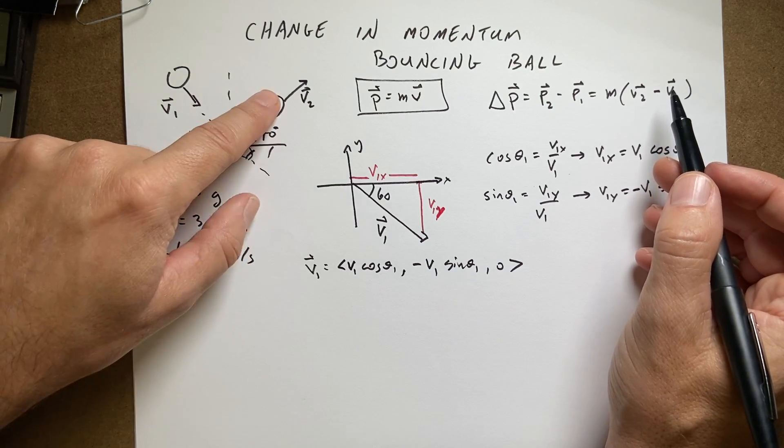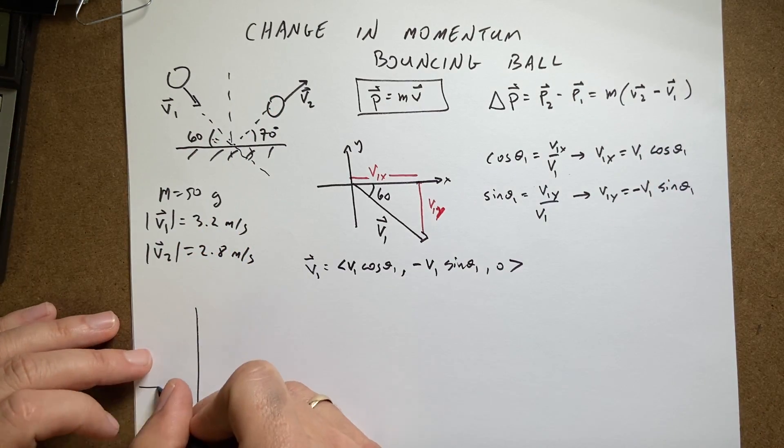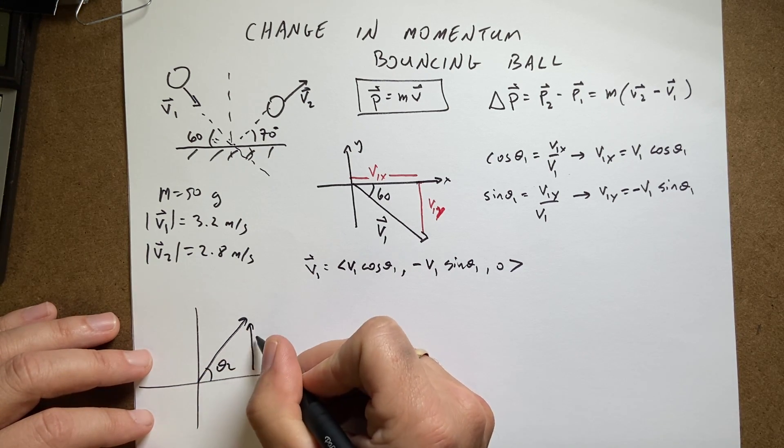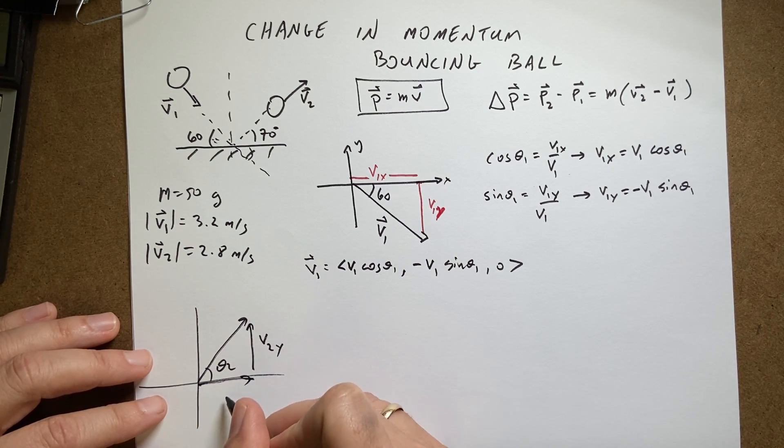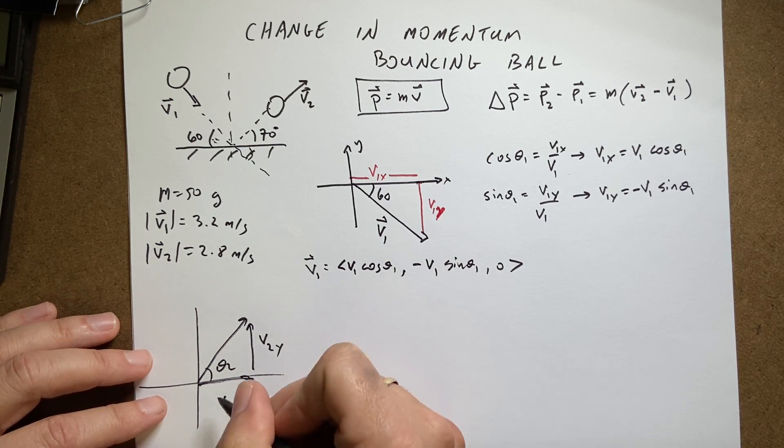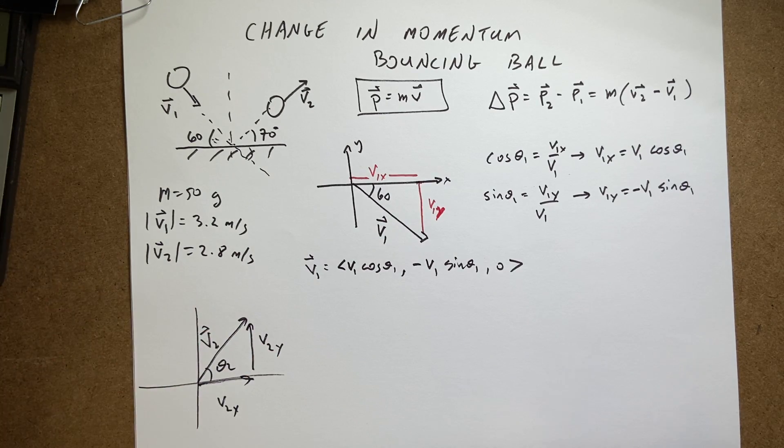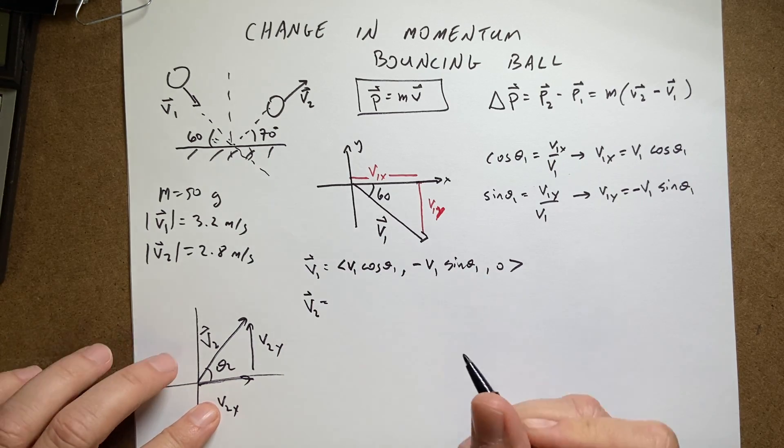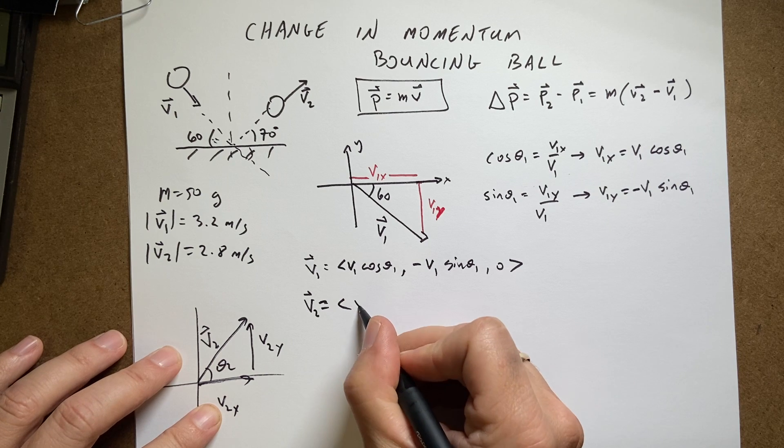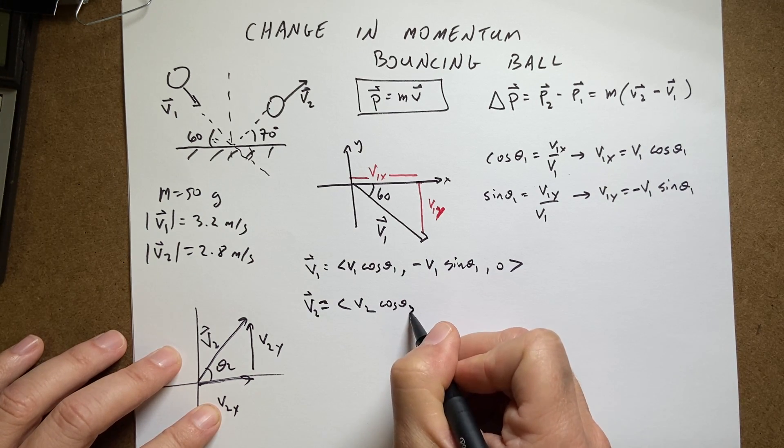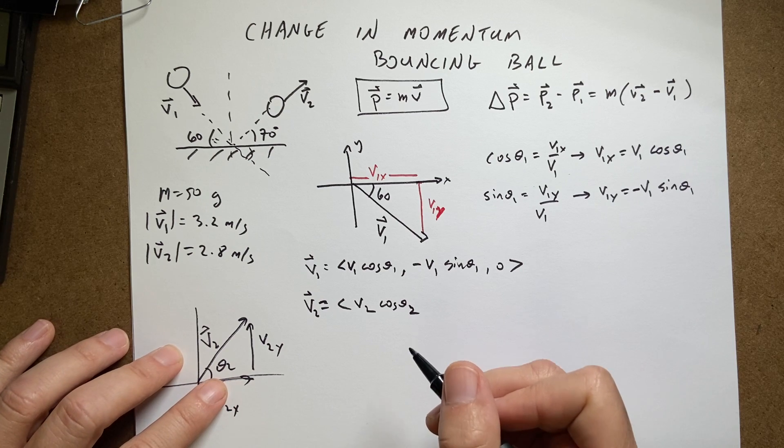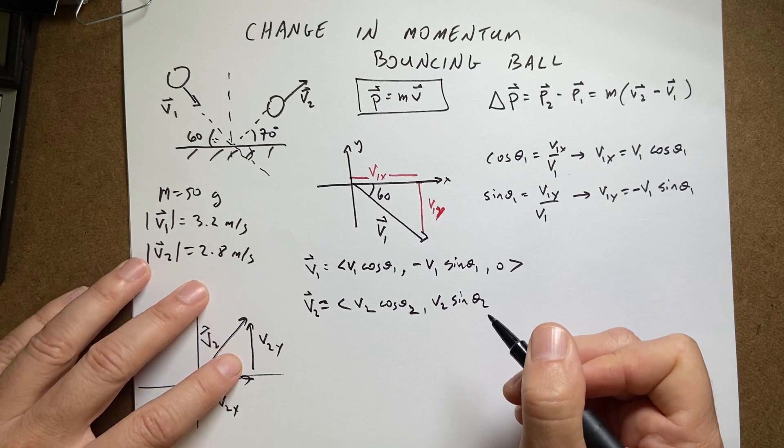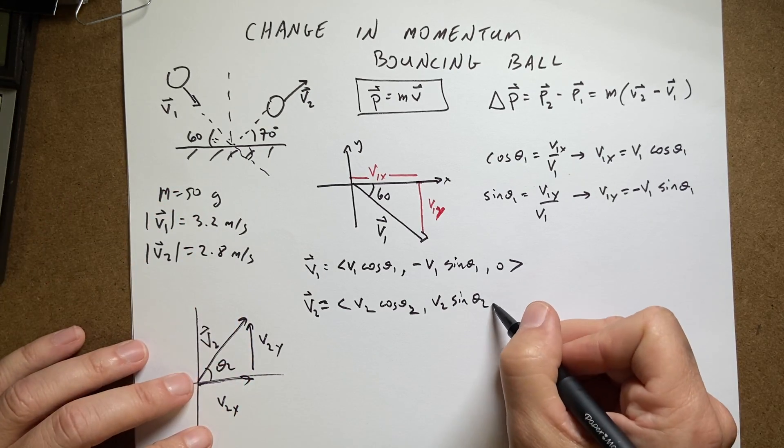Now I need to do the same thing for v2. So let's just draw v2. This is theta2. This is v2y. This is v2x. And that's v2 magnitude. Well, the same thing works, right? I can still do the same thing. So now I get v2 equals the x component. It's going to be equal to v2 cosine theta2. And it's going to be in the positive x direction. And then I'm going to get v2 sine theta2. This is in the positive y direction. And then zero.